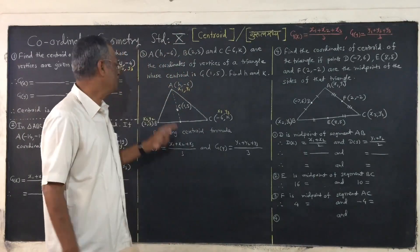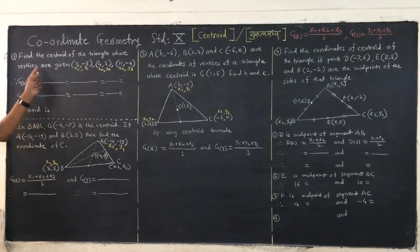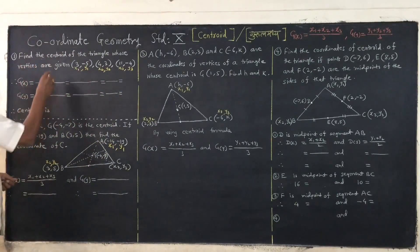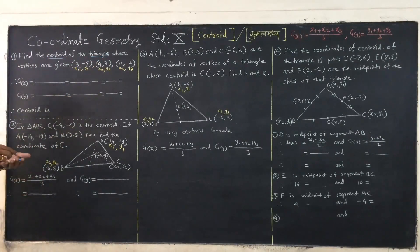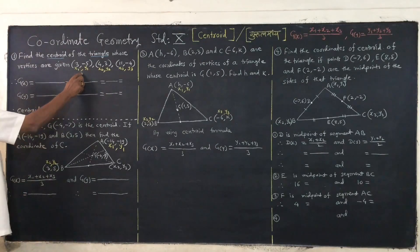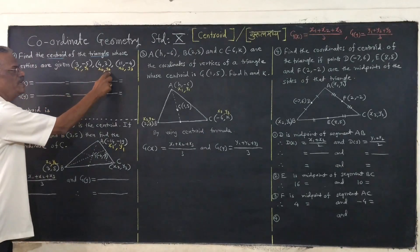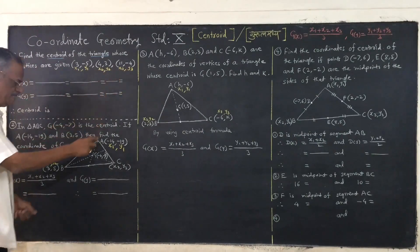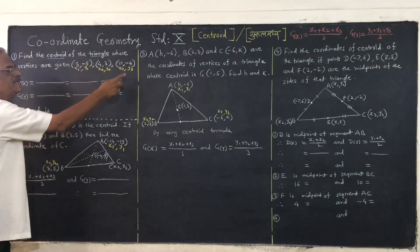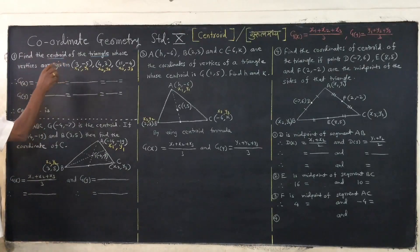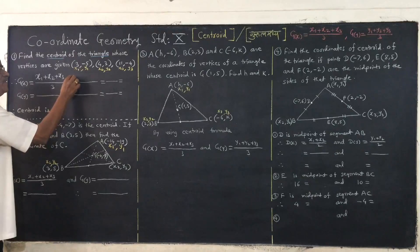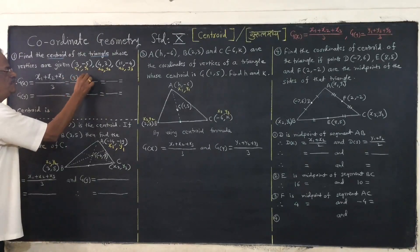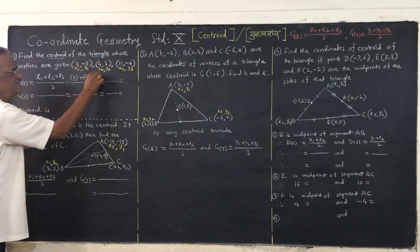Let us look at the use of centroid with the first example. Read the example: find the centroid of the triangle whose three vertices are given. First point is x1, y1; second point is x2, y2; third point is x3, y3. There is a triangle and three vertices are given. Remember: x-coordinate of G is x1 plus x2 plus x3 upon 3. Substitute: x1 equals 3, x2 equals 4, and x3 equals 11.